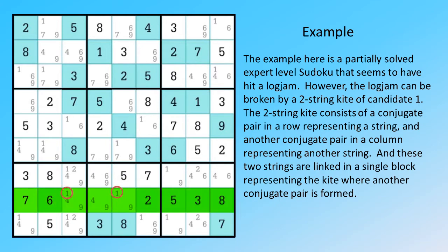in a row representing a string, and another conjugate pair in a column representing another string. And these two strings are linked in a single block representing the kite, where another conjugate pair is formed.